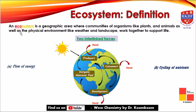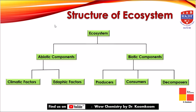Starting with the definition of ecosystem: the word ecosystem is made up of two words — 'eco' means community and 'system' means interaction. An ecosystem is any geographical area where a group of communities of organisms like plants and animals, as well as the physical environment like weather and landscape, work together to support the life system. There are basically two interlinked forces which work together in an ecosystem: the flow of energy and the cycling of nutrients. This can be shown with the help of a diagram where energy as well as nutrients flow from producers to consumers to decomposers, then to the inorganic nutrient pool, and then again back to the producers. The best example to describe an ecosystem is an aquarium.